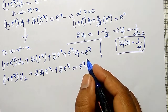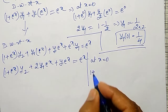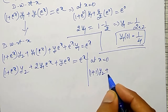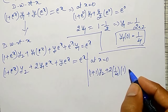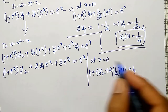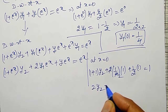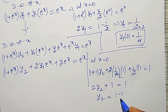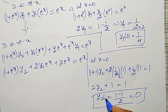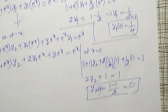Simplifying: 2·y₂ + 1 = 1, therefore y₂(0) = 0. So this term vanishes. I have so far found two non-vanishing terms — y(0) and y₁(0). I must continue differentiating to find more non-vanishing terms.